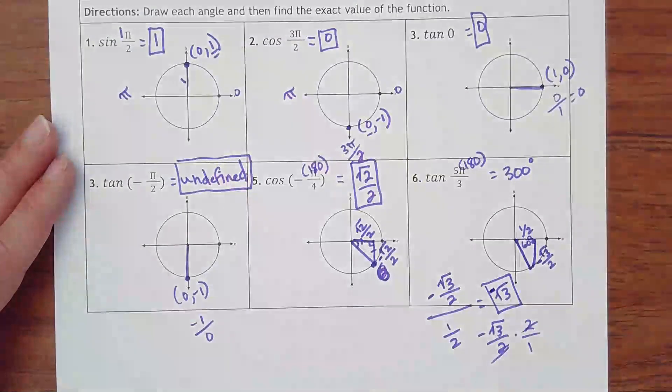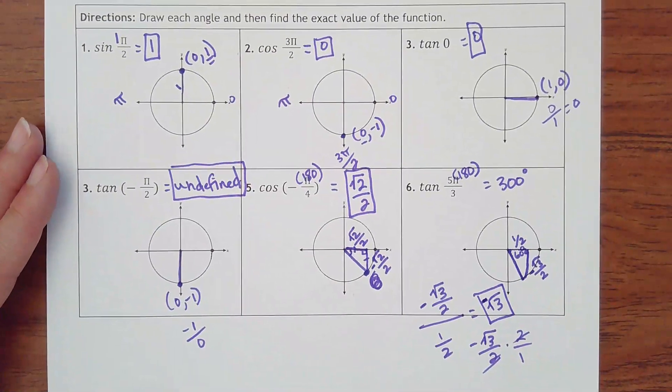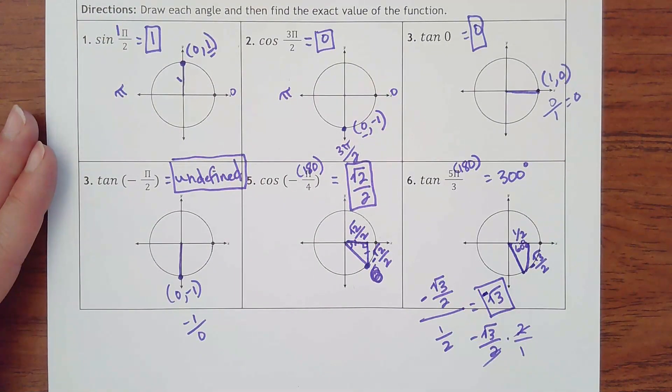So, if you're ever stuck on the radians, just plug 180 in for pi. That'll get the degrees, and then you do exactly as we've done before.